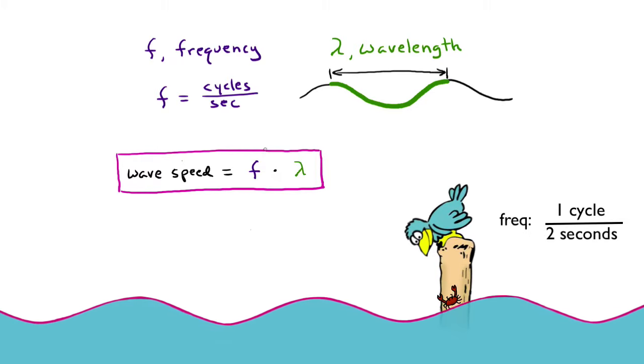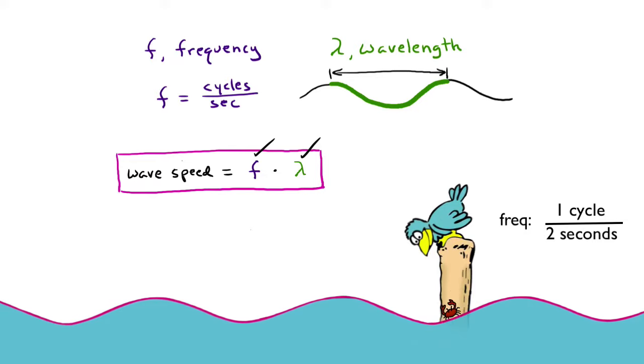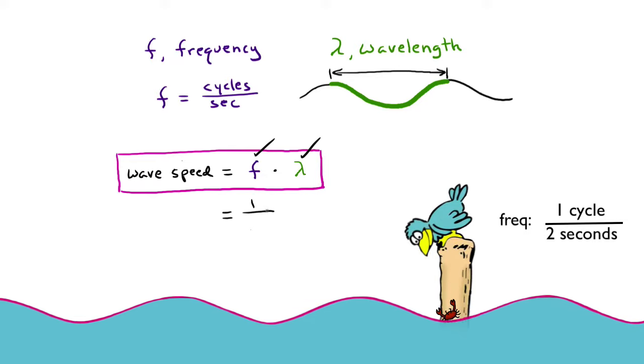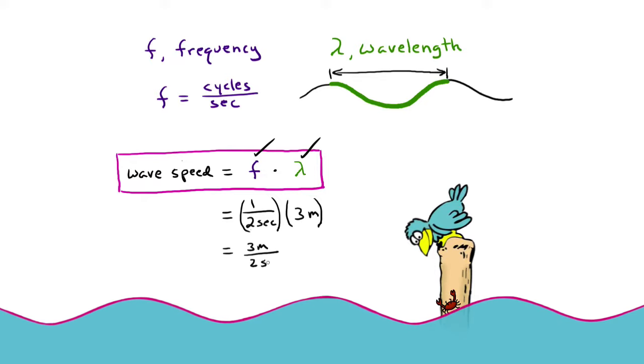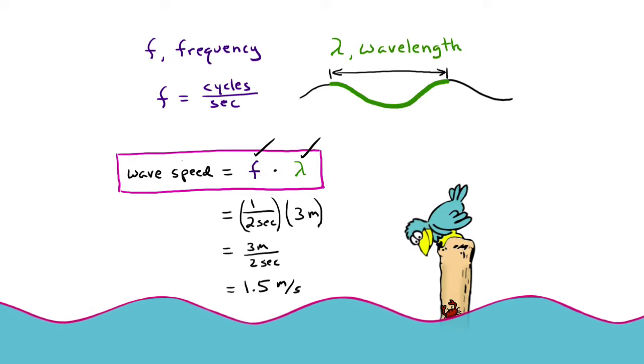The wave speed is frequency times wavelength. So that's one cycle per two seconds times three meters equals 1.5 meters per second.